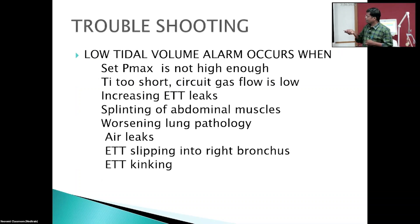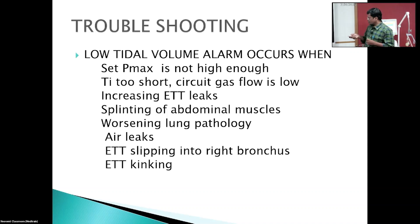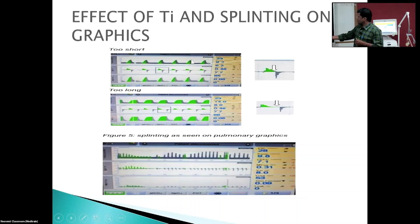Troubleshooting: a low tidal volume alarm occurs when P-max is not high enough, Ti and gas flow are low, there is an increasing ET tube leak, the baby is crying or splinting abdominal muscles, or there is worsening lung pathology or air leak. Monitor for ET tube kinking or slipping into the right bronchus. The graphs shown illustrate: short Ti with a small unsustained peak, too long Ti, and a baby splinting generating higher tidal volume.